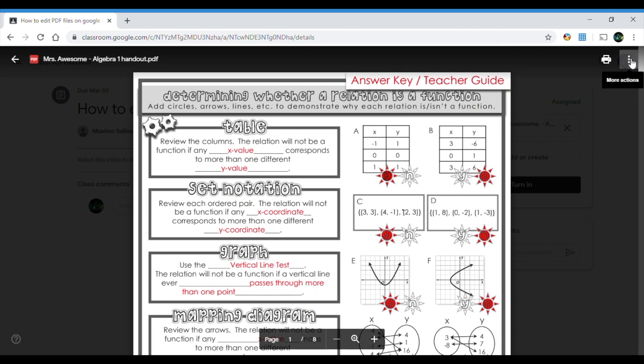Go ahead and click on the three dots on the right side where it says more action. Click on that and you're gonna see two things. You're gonna see details and you're gonna see open in new window. We're gonna go ahead and click where it says open in new window.